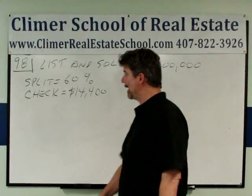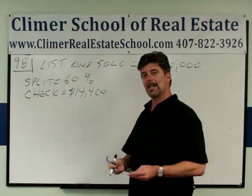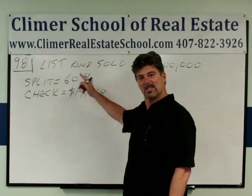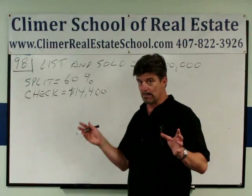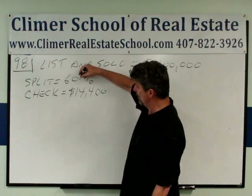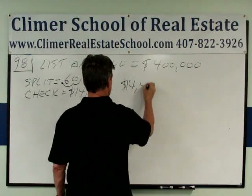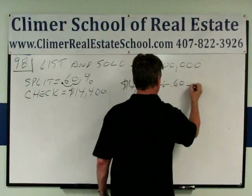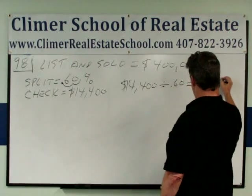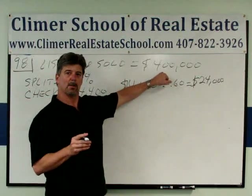We've got to talk about a couple of things. He listed and sold a house for $400,000. His split was 60%, and he had a check for $14,400. The first thing we have to do is start from his commission and his split and figure out what was the total commission. I'm going to take $14,400, turn the percentage into a decimal by moving over two spaces, and divide. $14,400 divided by 0.6 equals $24,000. That $24,000 is the total commission to the broker.